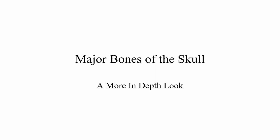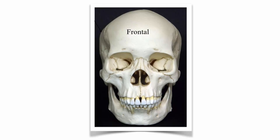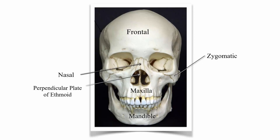Let's take a more in-depth look at the major bones of the skull. Here's the frontal bone, the zygomatic, the nasal bone, the maxilla, and the mandible. Looking inside the nose, we can see the perpendicular plate of the ethmoid, and below that is the vomer. The perpendicular plate of the ethmoid and the vomer make up what we call the bony septum of the nose, dividing the right and left nasal cavities.